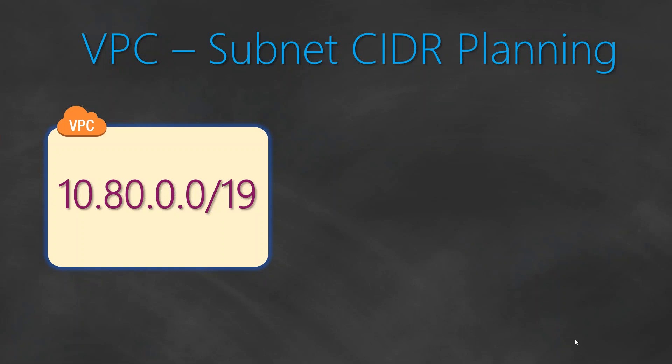Hello folks. Today we are going to talk about how to plan your VPC CIDR. Let's say, for example, your architect or your on-premise team has given you a big CIDR range, as you can see here — 10.80.0.0/19 — and you want to split them into smaller subnets so that you can create your VPC in AWS cloud.